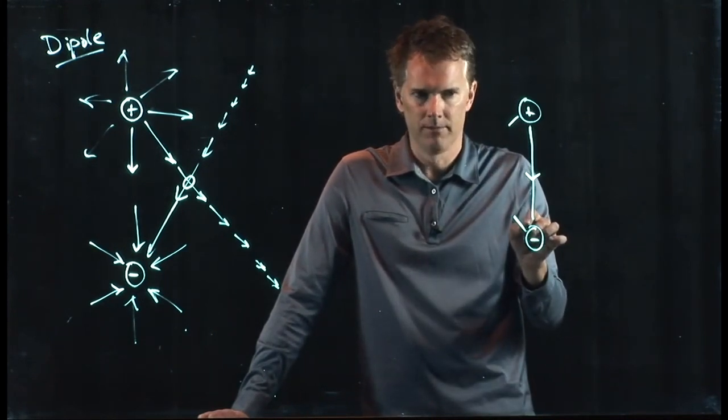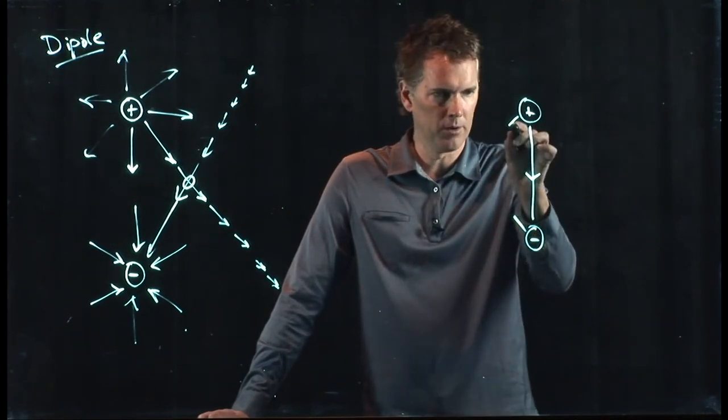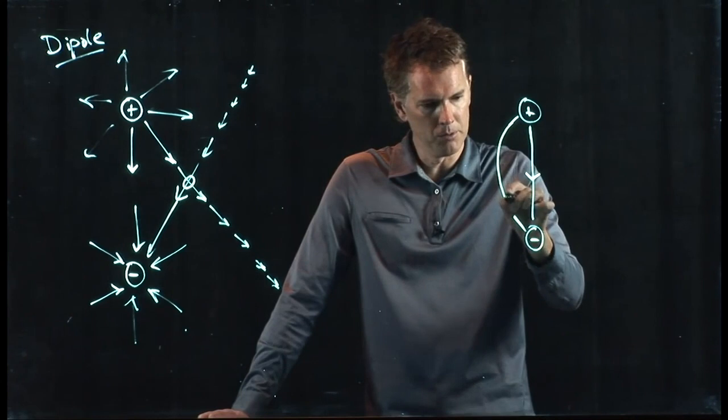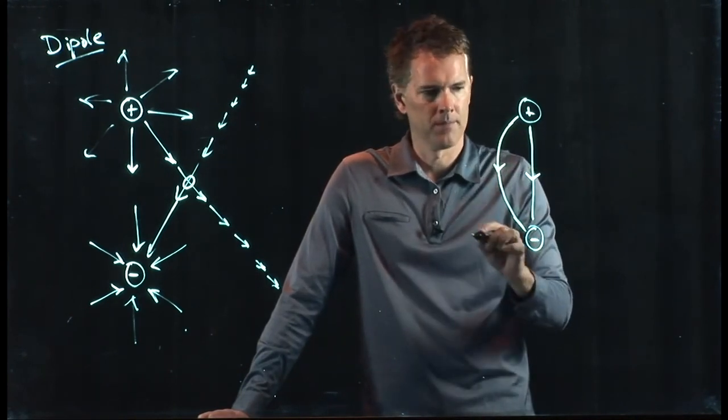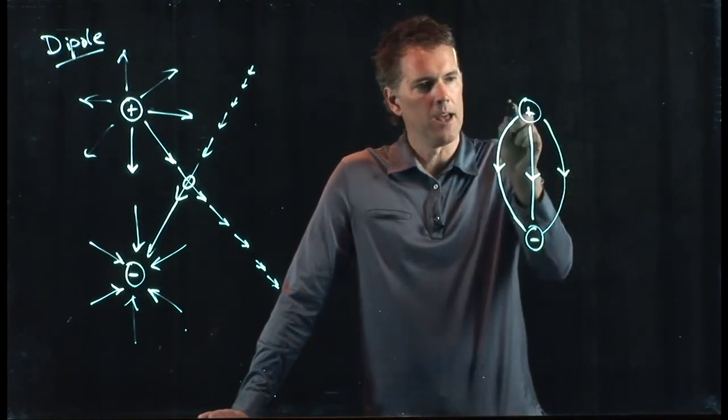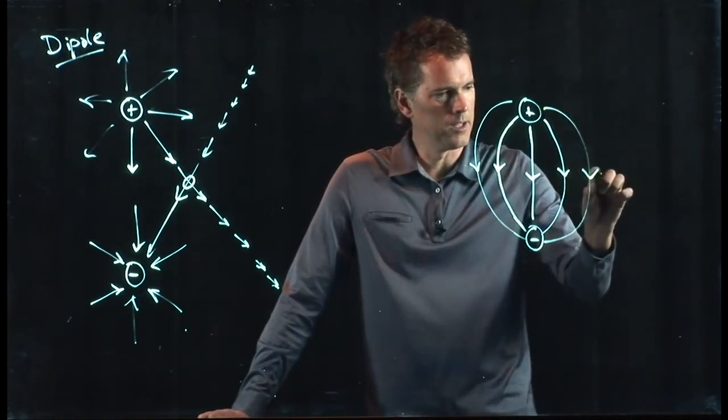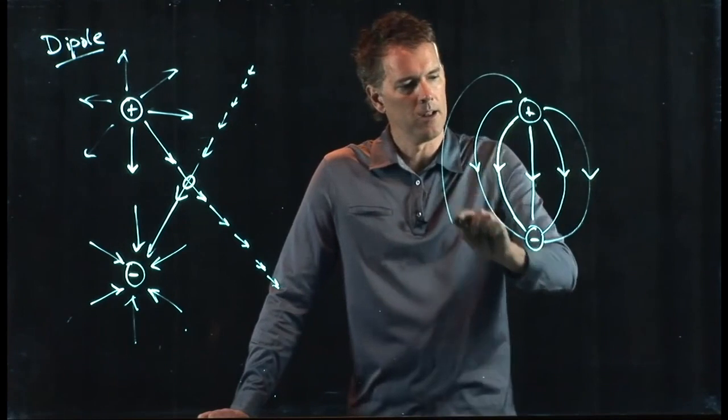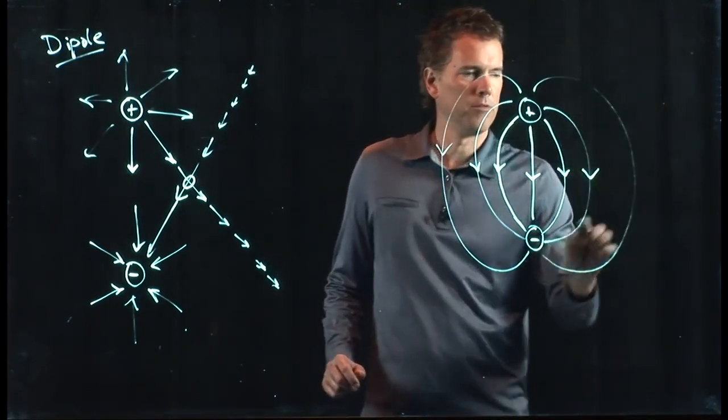But physics never behaves that way, right? Physics is smooth and so the curve has to be smooth. And so it looks like that. And there's one on the other side that looks like that. And then there's another one here that looks like this. And another one there that looks like that. And another one there that looks like that. And so forth.